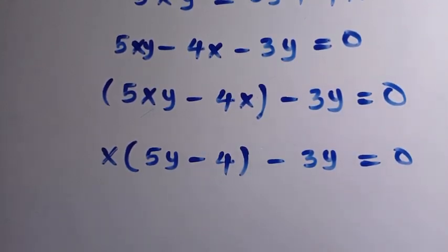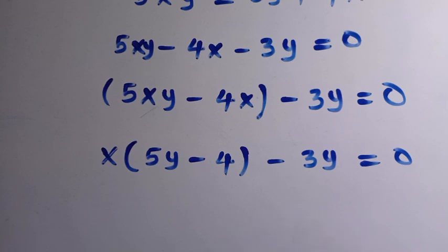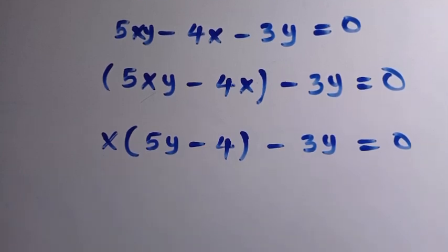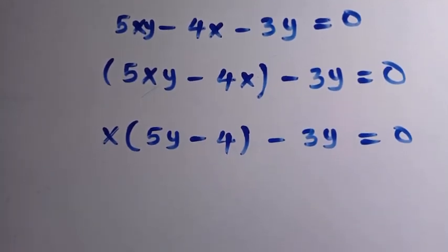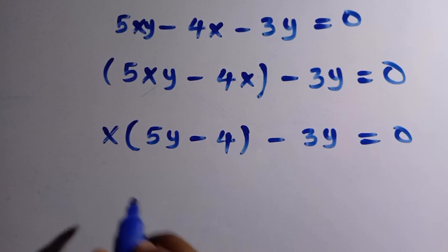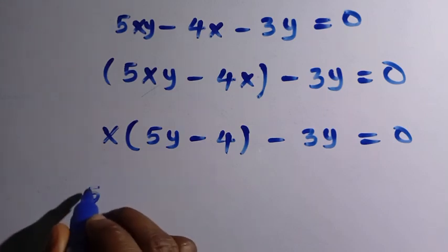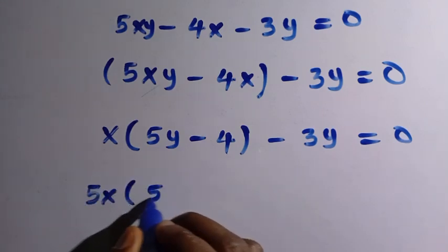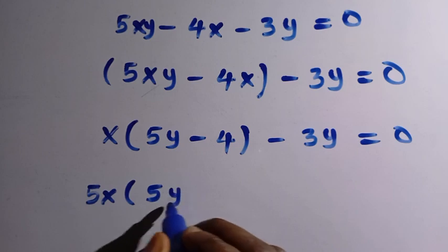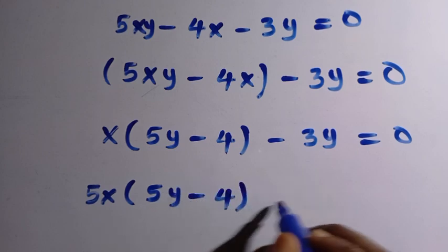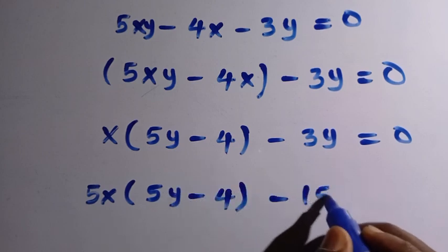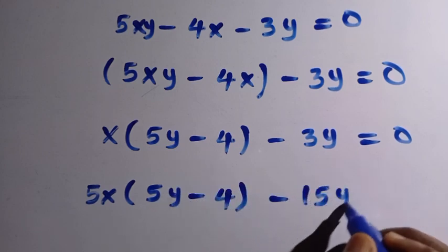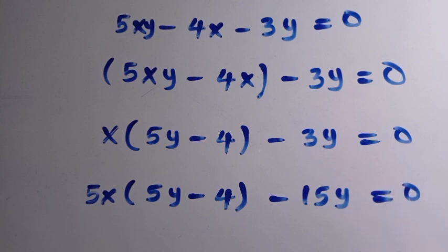Now we multiply through by 5, so doing that we have 5x times the bracket (5y minus 4), then minus 15y equals 0.